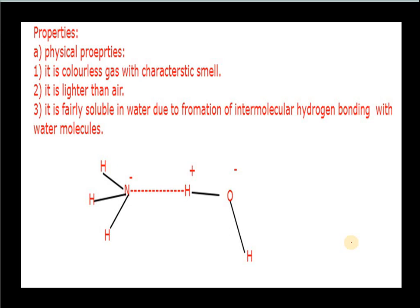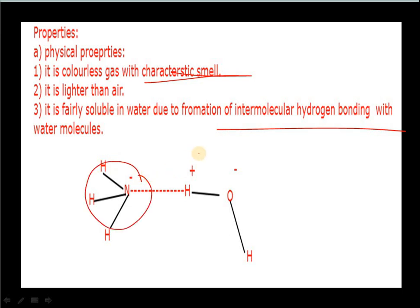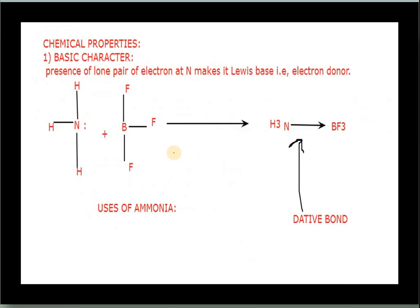Physical properties of ammonia: it is a colorless gas with a characteristic pungent smell. If directly inhaled, it causes a strong, distinctive sensation. It is lighter than air and is fairly soluble in water due to the formation of intermolecular hydrogen bonding — nitrogen in ammonia forms hydrogen bonds with hydrogen in water, making it highly soluble.